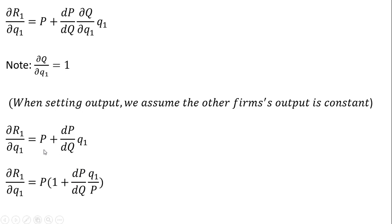I'm going to factor out a price term on the right-hand side: ∂R₁/∂q₁ = P(1 + (dP/dQ)(q₁/P)). Notice I have to have this P in the denominator. If I multiply this P back through, those P's would cancel and we'd be left with the previous term.